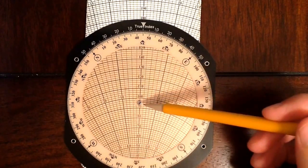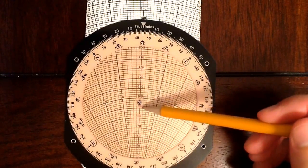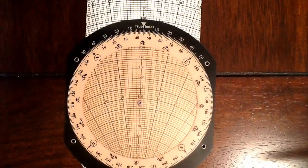It's also giving me my ground speed, which is halfway between 90 and 100, and I can interpolate at 95 knots.